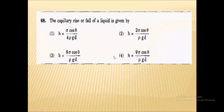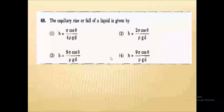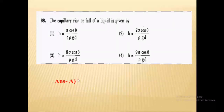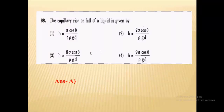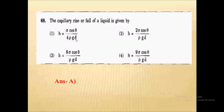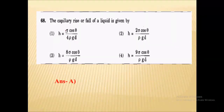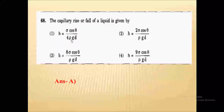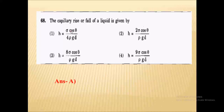The capillary rise or fall of a liquid is given by H = 4σ cosθ / (ρgd). This question was asked in the RTO exam in 2013. The correct answer is H equals 4 sigma cos theta upon rho g d. You need to remember this formula.